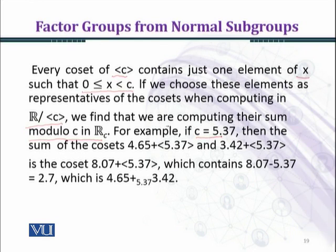If we choose c equal to 5.37, then the sum of cosets 4.65 plus the group generated by 5.37. The group generated by 5.37 will have 5.37 and all multiples of 5.37. 1 into 5.37 and minus 1 into 5.37, these are the same. Similarly, 2 into 5.37 and minus 2 into 5.37, these are the same, and so on.